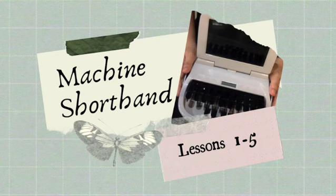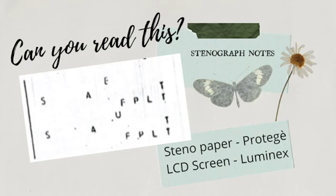So are you ready learners? Let's start! Can you read this one? So that is what we call Stenograph Notes or Stenographic Notes. This is what will appear on the steno paper if we are using the Protégé version or the non-electronic machine. And this is what you will find in the LCD screen if we are using the latest machine shorthand, which is the 2015 Luminex.